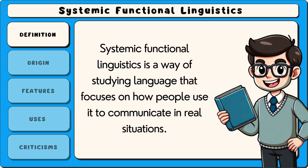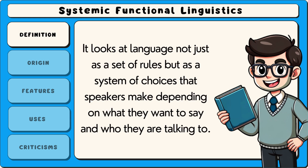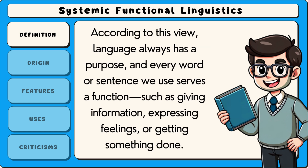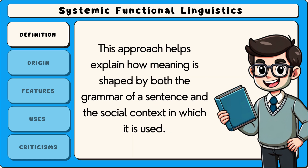Systemic functional linguistics is a way of studying language that focuses on how people use it to communicate in real situations. It looks at language not just as a set of rules, but as a system of choices that speakers make depending on what they want to say and who they are talking to. According to this view, language always has a purpose and every word or sentence we use serves a function, such as giving information, expressing feelings or getting something done. This approach helps explain how meaning is shaped by both the grammar of a sentence and the social context in which it is used.